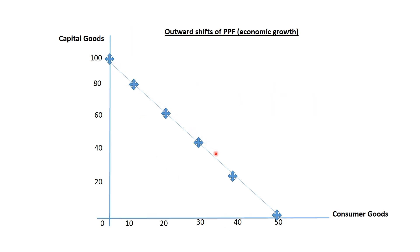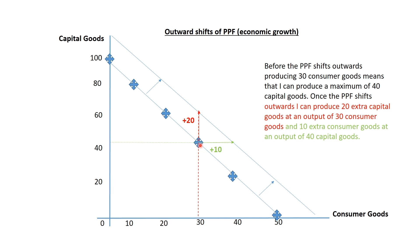As this frontier shows the maximum output of a combination of goods and services that could be produced, in order to produce more goods and services, the PPF would have to shift outwards. With an outward shift of the PPF, we can now produce 20 extra capital goods and 10 extra consumer goods compared to before. Before the shift, producing 30 consumer goods meant a maximum of 40 capital goods. After the shift, producing 30 consumer goods allows 20 extra capital goods, and at 40 capital goods, I can now produce 10 more consumer goods.